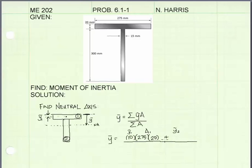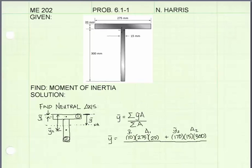For piece 2, y-tilde 2 is the distance from the datum line at the top down to the centroid of piece 2. The stem of the T is 300 millimeters, so the centroid is 150 millimeters down from the intersection plus an additional 20 millimeters, giving 170 millimeters. Its area is 15 millimeters wide by 300 millimeters tall. Dividing by the sum of the areas, we calculate that the distance y-bar from the top of the cross section to the neutral axis is 82 millimeters.